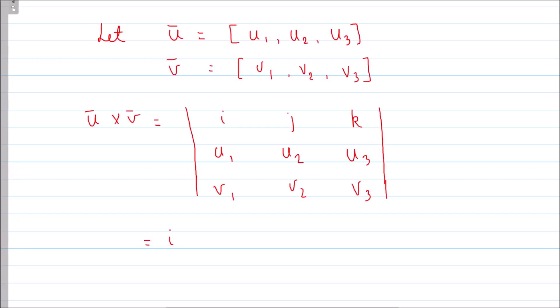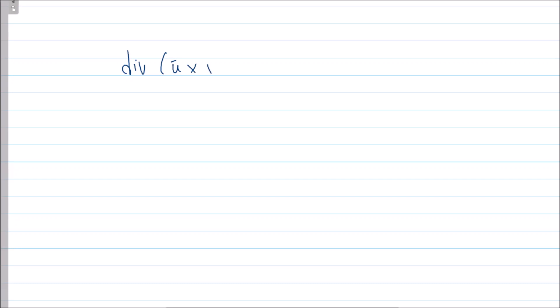To prove this, I will use one key result: the divergence of u cross v equals v dot curl(u) minus u dot curl(v). This is the identity I am going to use, and once you have this result, your question is essentially done.